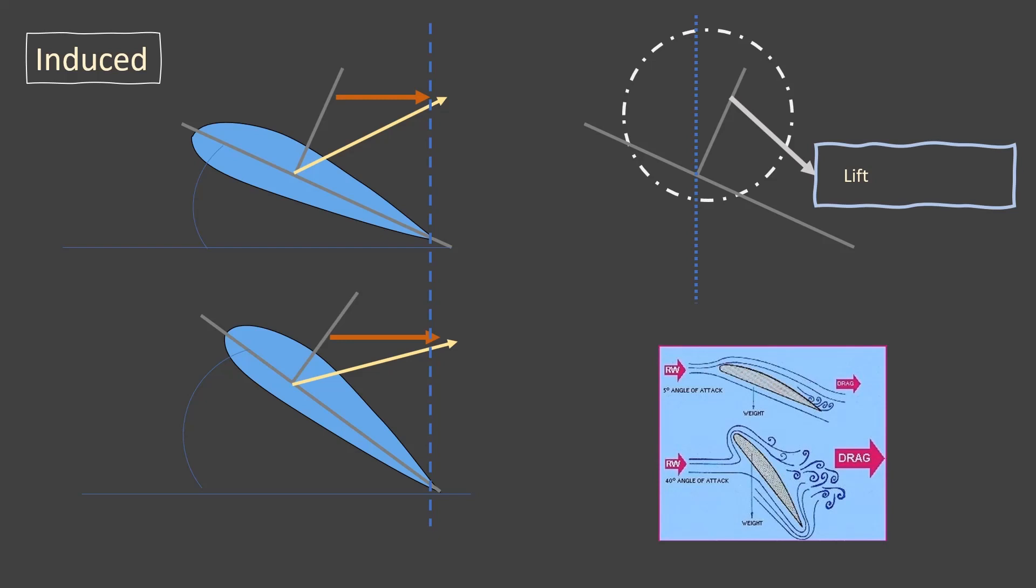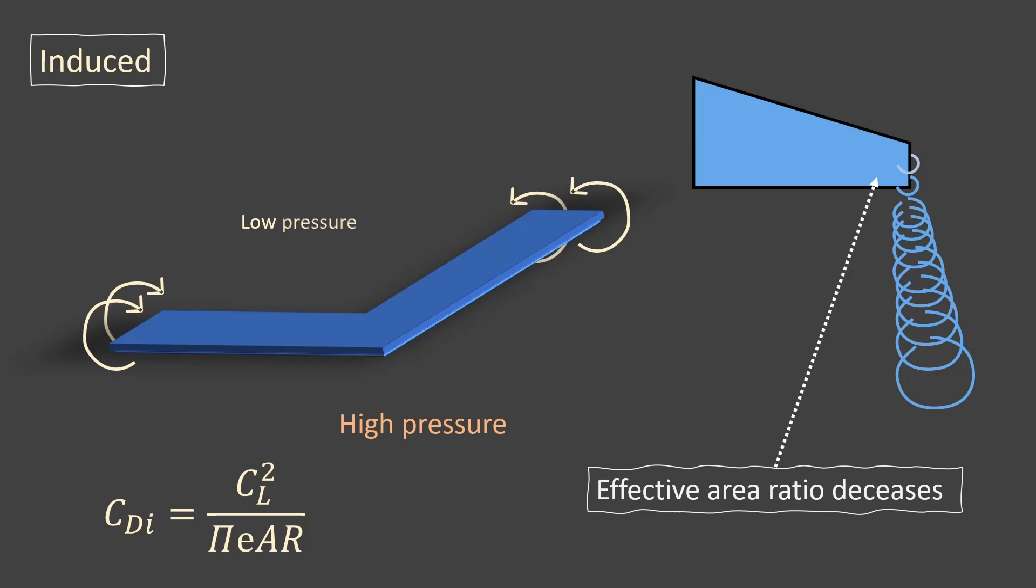Wing tip vortices come under the induced drag. The high pressure underneath the wing causes the airflow at the tip of the wing to curl around from bottom to top in a circular motion. This vortices reduces the effective area ratio.